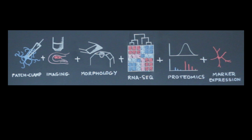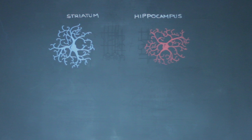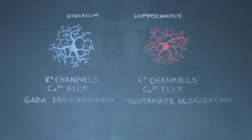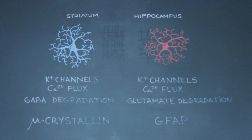RNA-seq and proteomic analysis show many molecules that were differentially expressed between striatum and hippocampus. Some of these were related to known astrocyte features, such as potassium handling and calcium flux. We also found that a protein that degrades GABA was enriched in striatal astrocytes, and a protein that degrades glutamate was enriched in the hippocampal ones. The biggest difference we found at the molecular level was a fairly unknown protein called mu-crystalline, which was highly enriched in striatal astrocytes.